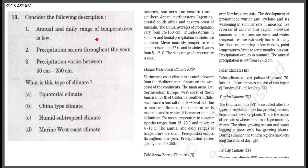Consider the following description: annual and daily range of temperature is low, precipitation occurs throughout the year, and precipitation varies between 50 to 250 cm. This is the Marine West Coast climate. The mean temperature in summer ranges from 15 to 20 degrees and in winter from 4 to 10 degrees. The annual and daily range of temperature are small.